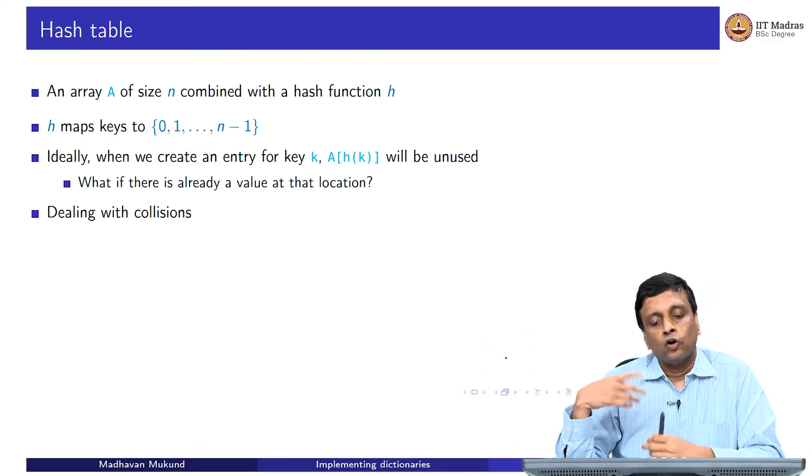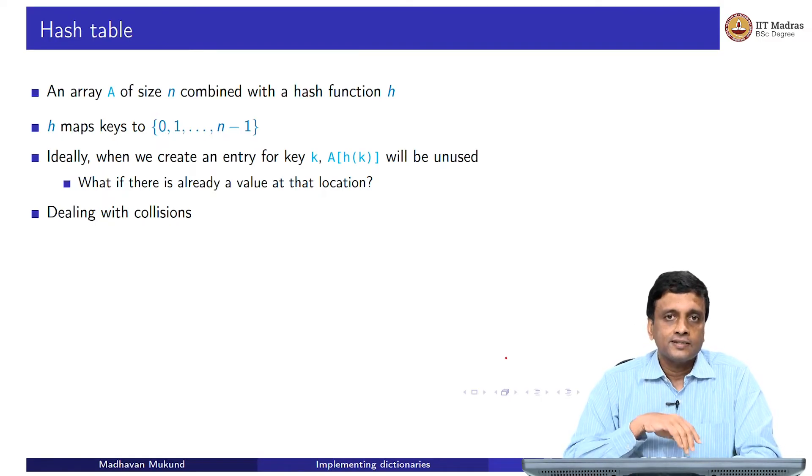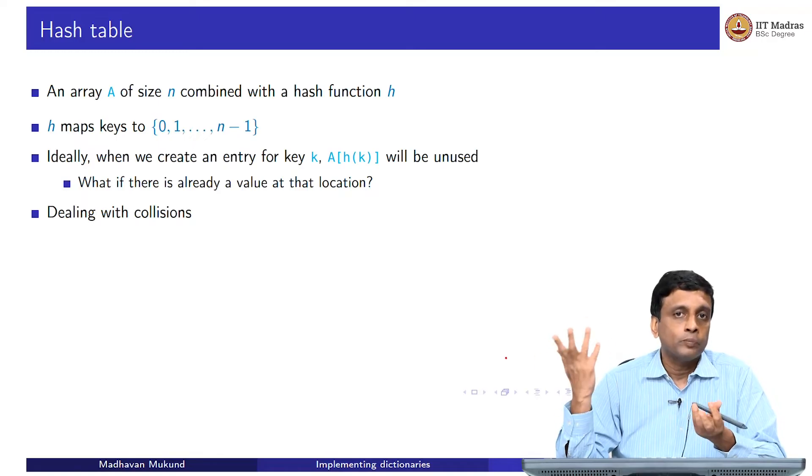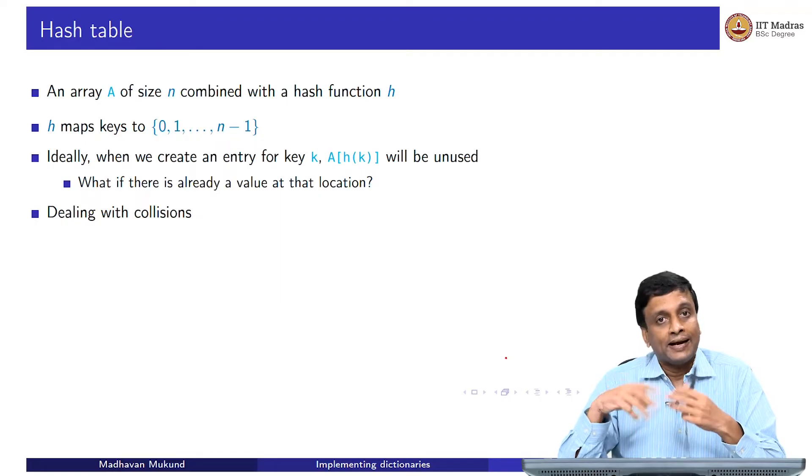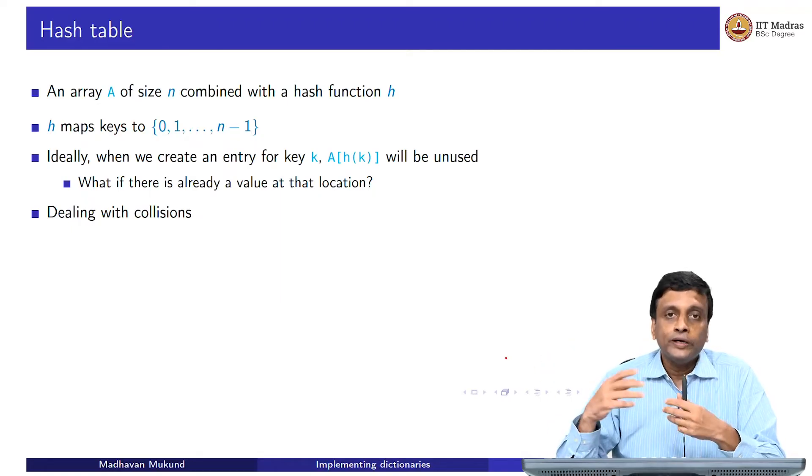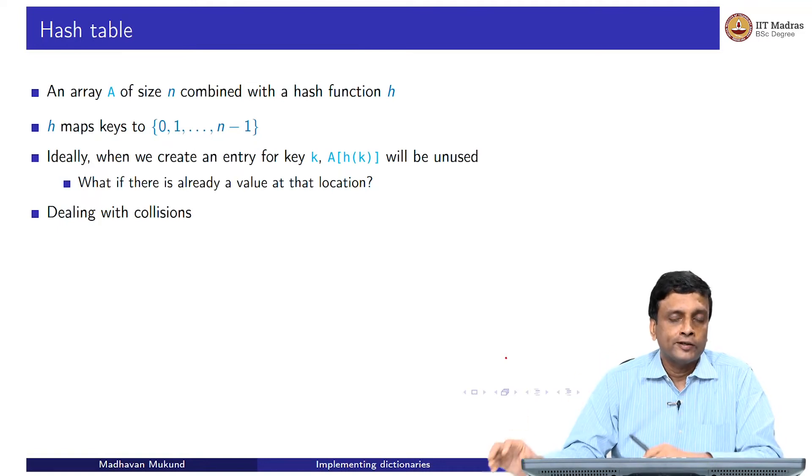But what will happen is that sometimes because of collisions that place is occupied. If there is already a value at that location, then this hash table has to deal with this collision, it cannot just replace because then the old value will be lost. It cannot put it in some random place, because if it puts it in a random place, you will never find it. You need to have a systematic way of putting it somewhere where you will find it if you come to look at it later.